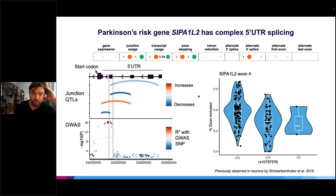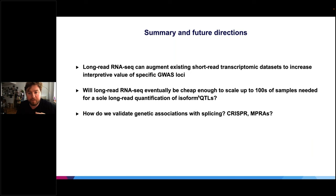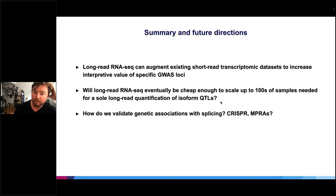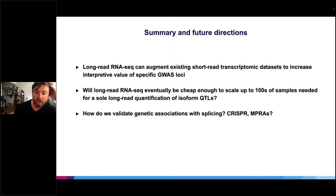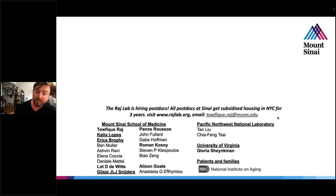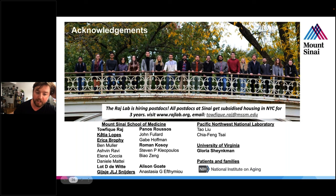In summary, long-read RNA-seq is a really exciting technology that increases our interpretive value of specific GWAS loci. But can we scale this up to do QTL mapping only in long-read RNA-seq? Not sure yet — the current QTL data is estimated from short reads, which is an imperfect black box for getting from reads to isoforms. The bigger question is how to validate these splicing associations: tools for expression-based validation exist (enhancers, CRISPR, massively parallel reporter assays), but how to do this for splicing remains an open question. Thanks to patients, families, collaborators, and lab members.